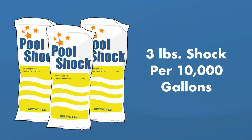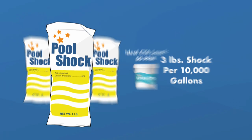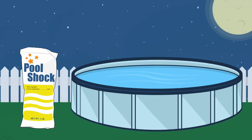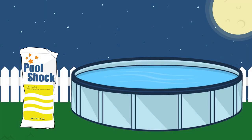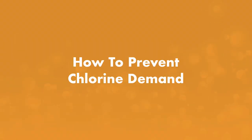Then add a triple dose of calcium hypochlorite shock — aka cal hypo shock. To triple shock your pool, add three pounds of shock per 10,000 gallons of water. Before adding the shock, make sure your CYA or stabilizer level is between 30 ppm and 80 ppm, with 50 ppm being ideal. Also remember to shock at night because sunlight can break down your chlorine. Keep your filter system running to distribute the shock, then retest your water after it circulates overnight or after eight hours.